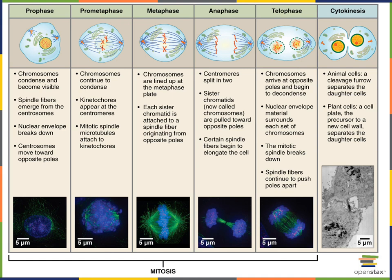That nuclear envelope starts to break down during prophase. Then in prometaphase, now that the nuclear envelope has broken down and the mitotic spindle has formed, the mitotic spindle produces microtubules that will bind to the chromosomes. Then metaphase is when the mitotic spindle pulls the chromosomes until they line up right at the midline, also known as the metaphase plate, where all the chromosomes are lined up on the midline.